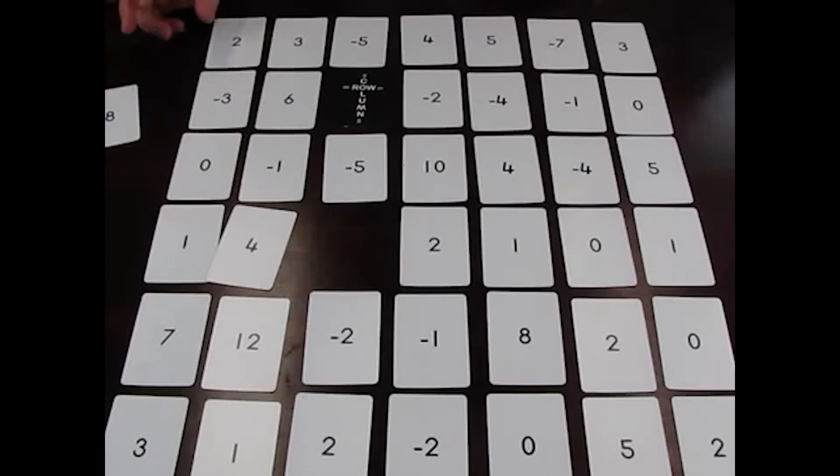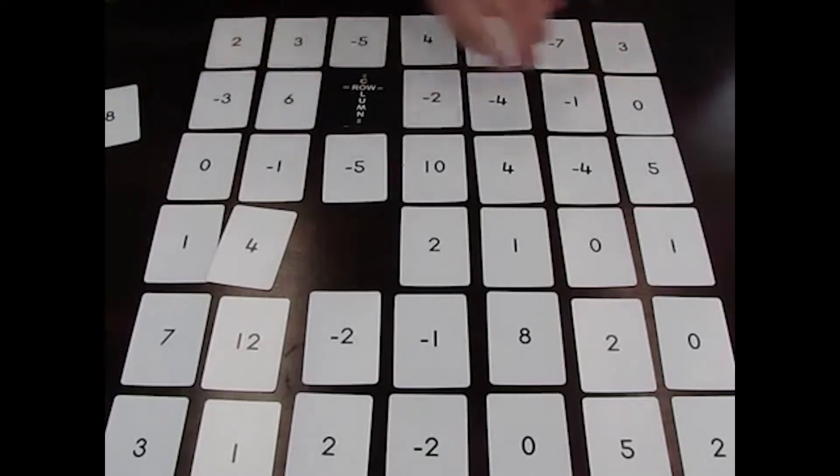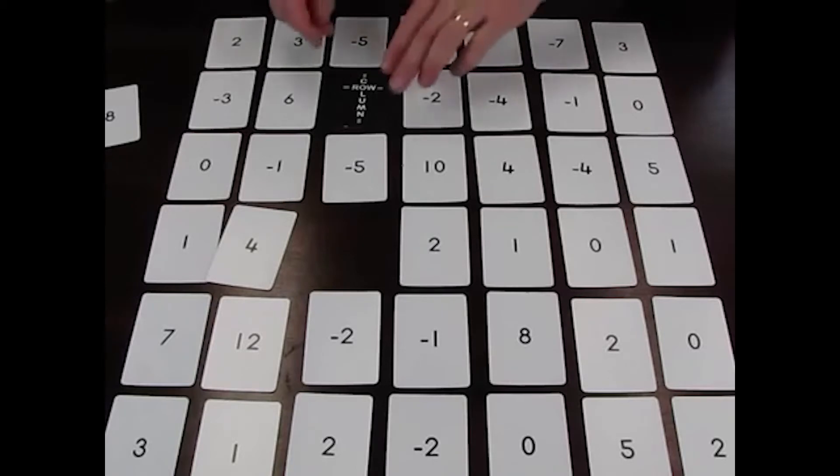The other player then has a shot, and that player can only choose a card from that row. Now there's a lot of negative numbers in here, so quite likely they will go for the 6.